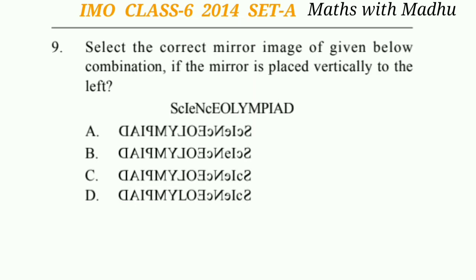Question 9: Select the correct mirror image of the given combination if the mirror is placed vertically to the left. Looking at the options carefully, the correct mirror image is option A.